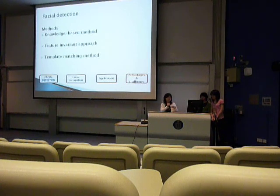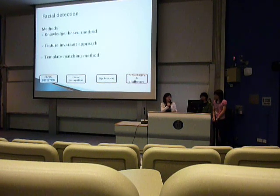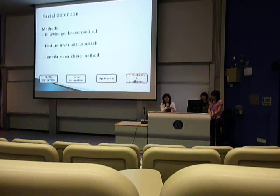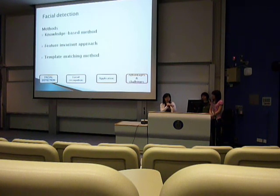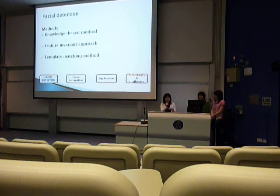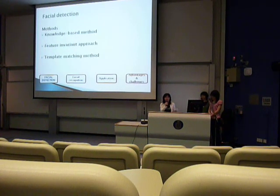First, facial detection. Facial detection is used to determine the locations and the size of human faces in arbitrary digital images. It is used to detect faces and ignore anything else, such as trees, buildings, and bodies.